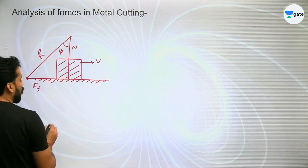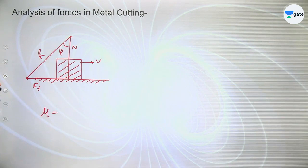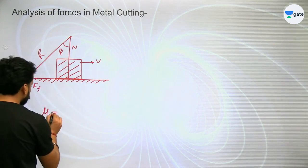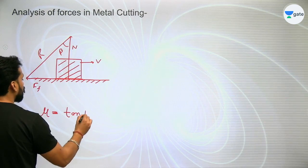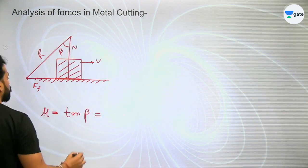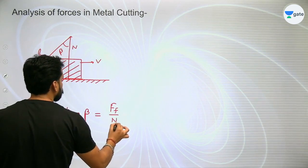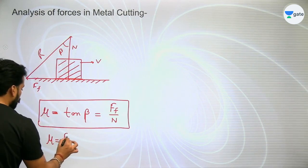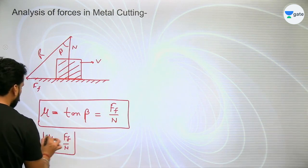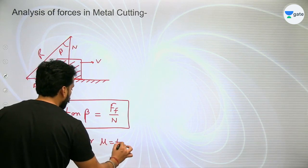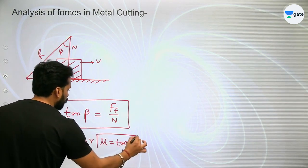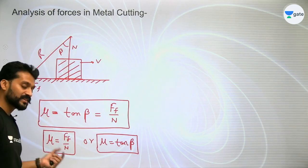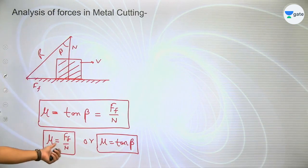So talking about this concept, the coefficient of friction — what is it? I have given it the name: tan(beta). When we talk about the ratio of friction force and normal reaction, that is mu. So directly, mu = FF/N, or mu = tan(beta), where beta is the friction angle. So friends, this is a new construct — that is the coefficient of friction. To find mu, I will divide friction force by N, and from there mu will be known.